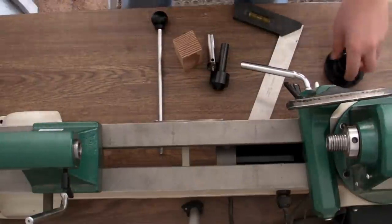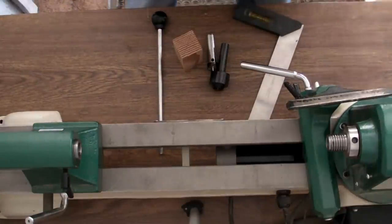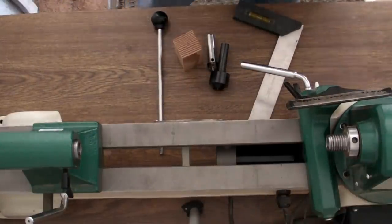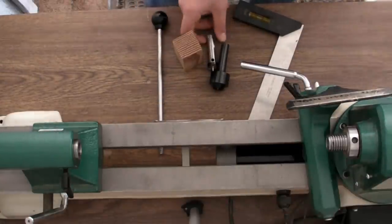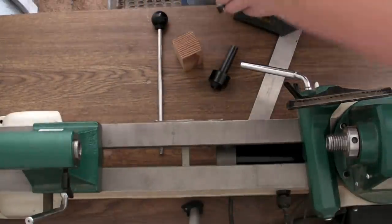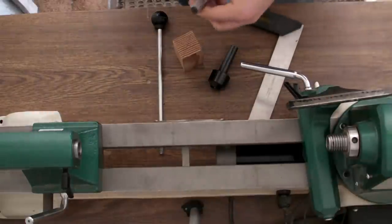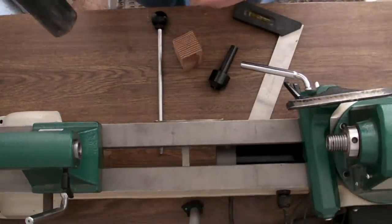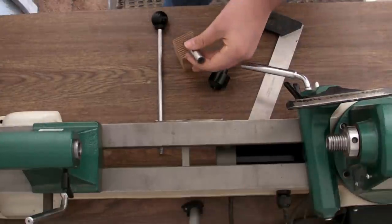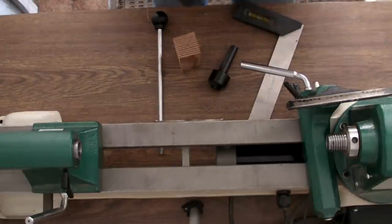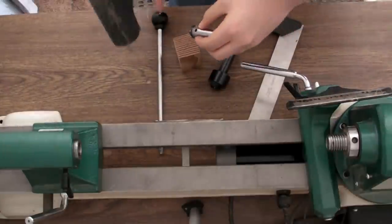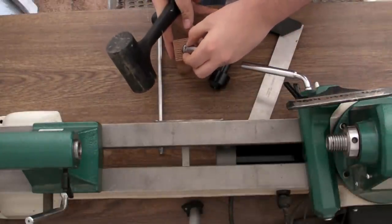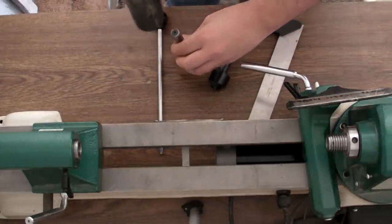Now, for this part, we will not need the faceplate. So you can just put that off to the side. Next, what we're going to do is we are going to take our spur, and we are going to hammer it in. You don't necessarily need to hammer it in, but I find that it provides better connection. So you put the tip, the very tip of the spur, right on your center mark, and just tap it in.